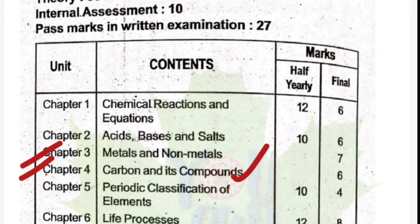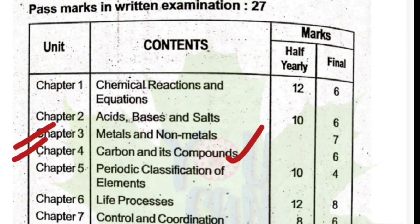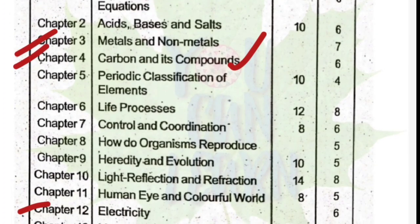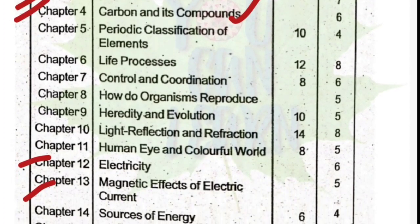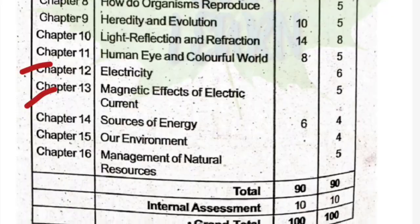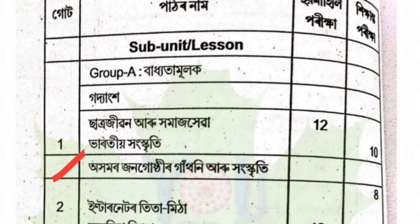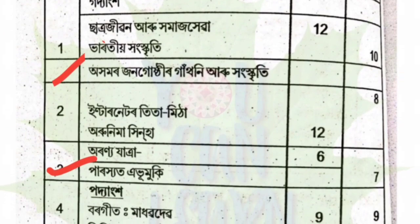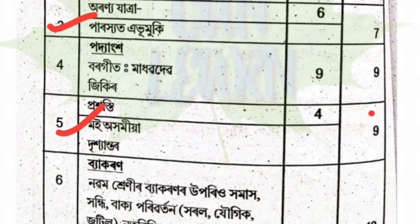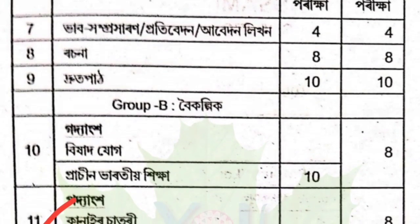I will start with the syllabus. The next chapter is Chapter 3, Metals and Non-Metals. Chapter 4, Carbon and its Components. Next, Chapter 12, Electricity. Chapter 13, Magnetic Effects and Electric Current.